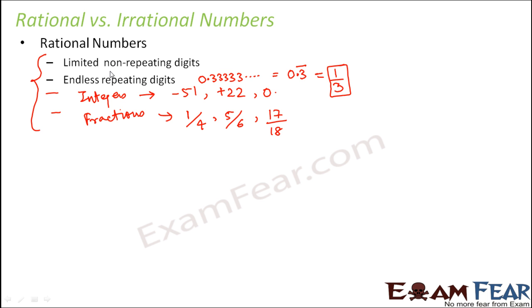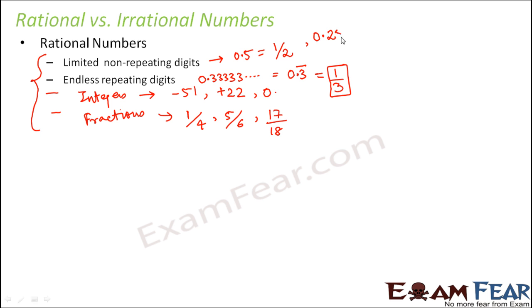When you talk about limited non-repeating digits, these could be something like 0.5, which can be represented as 1/2 — that's a rational number. Again, 0.25 is nothing but 1/4, so these are also rational numbers. So these are the things which fall under rational numbers.